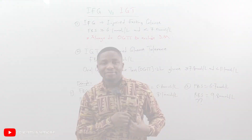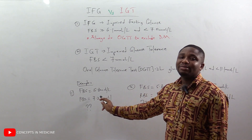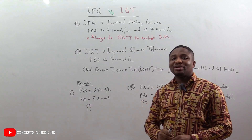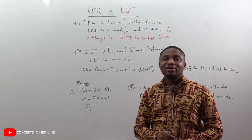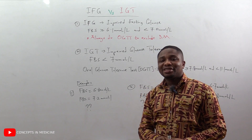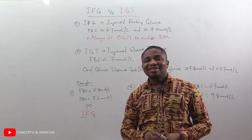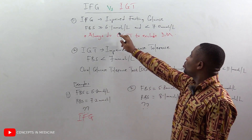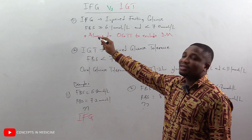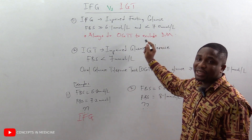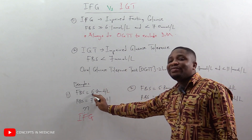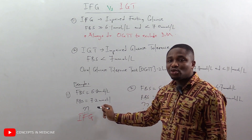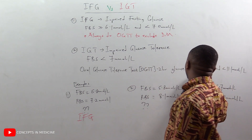Let's look at the first example: fasting blood sugar 6.8 mmol/L, random blood sugar 7.2 mmol/L. Is it impaired fasting glucose or impaired glucose tolerance? The fasting blood sugar is 6.8 — recall that the criteria for IFG is greater than or equal to 6.1 and less than 7.0. The value 6.8 falls within that range, so we have an impaired fasting glucose.